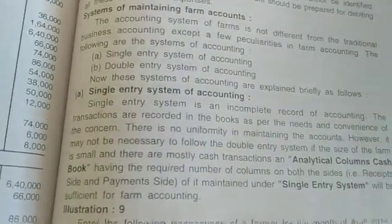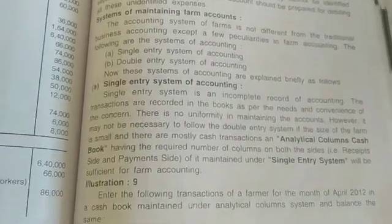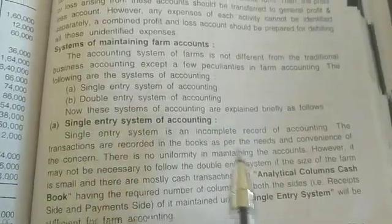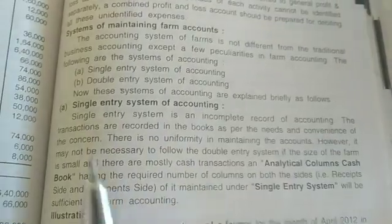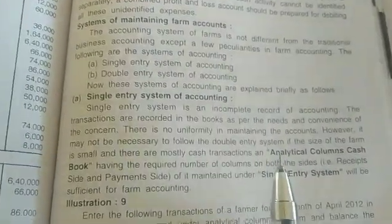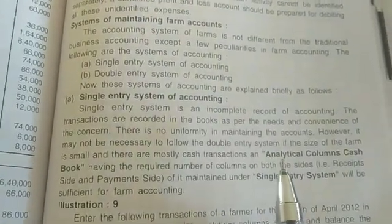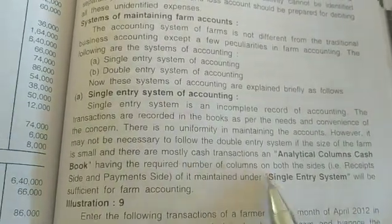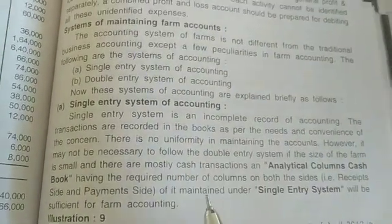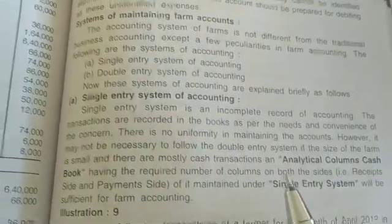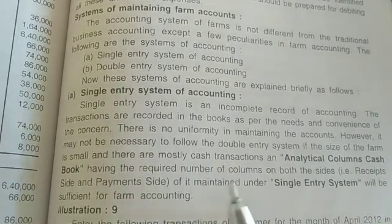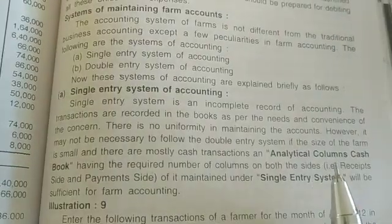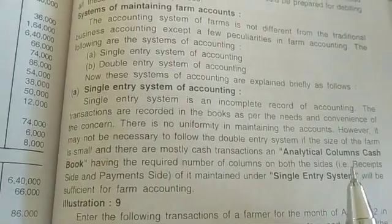In single entry system of accounting, it seems like an incomplete record of accounting. The transactions are recorded in these books as per the needs and convenience of the concern. So here mainly we are going to prepare according to our receipts and payments — we have to prepare analytical columns in the cash book. So many columns are required in the receipt side and also the payment side, and in single entry system this analytical column cash book is going to be maintained.